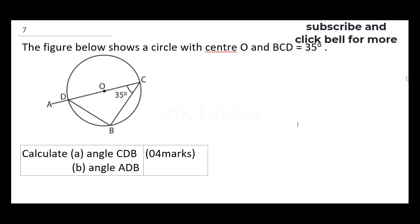The figure below shows a circle with center O, and angle BCD equals 35 degrees. Calculate angle CDB. Notice that the center of the circle lies on a straight line touching both parts of the circumference. Recall that an angle on a straight line is 180 degrees — that is the first thing you need to establish, so the angle here is 180 degrees.